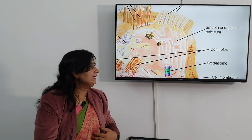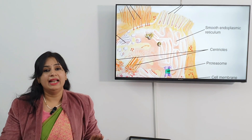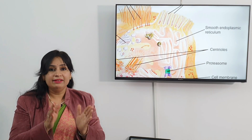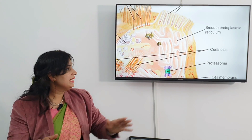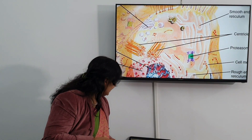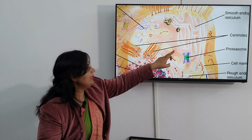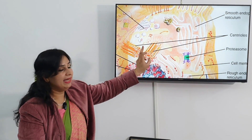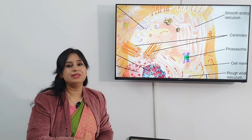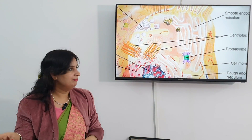One important thing — there are the centrioles. Centrioles are present in animal cells but not in plant cells, and they help in the division of cells. You can see these star-like structures which are present inside the animal cell and they help in cytokinesis. This is the second difference which is present in animal cell but not in plant cell.